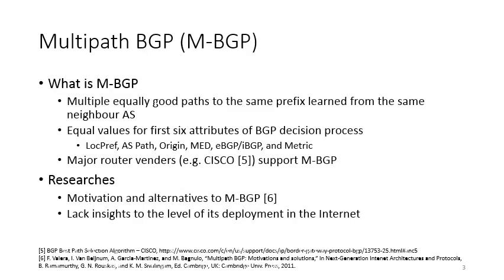Our paper studies multipath BGP deployment. First, we need to know what is multipath BGP. Multipath BGP is a technique that allows a router to learn and install multiple equally good paths to the same prefix from the same neighbor AS. These multiple equally good paths have equal values for the first six attributes of the BGP decision process. So far, some major router vendors have supported multipath BGP in their routers. In this area, there are a limited number of researches, and one of them discussed the motivation to apply multipath BGP and proposed some alternatives. Basically, we lack insights into the level of multipath BGP deployment in the Internet.